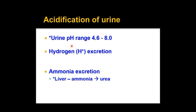Wrapping up the normal structure and function of the urinary tract: urine pH has a wide normal range of 4.6 to 8.0. The question is why is there such a large gradient in normal urine pH?